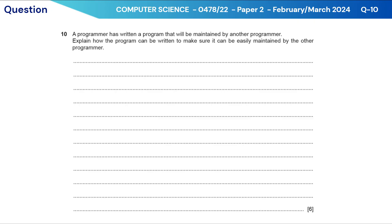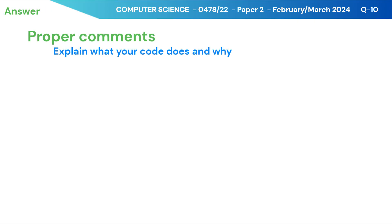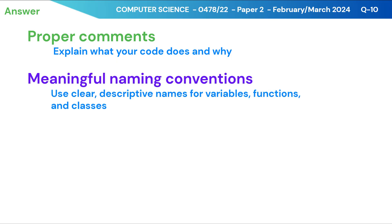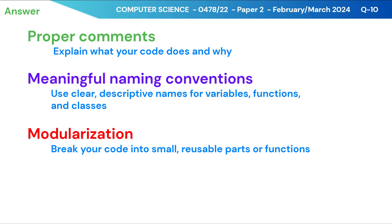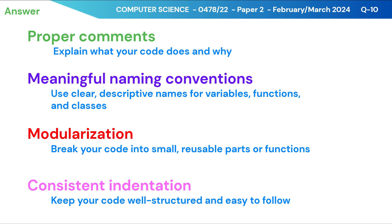The main standards to follow while coding include: proper comments — explain what your code does and why; meaningful naming conventions — use clear descriptive names for variables, functions, and classes; modularization — break your code into small reusable parts or functions; and consistent indentation — keep your code well structured and easy to follow.